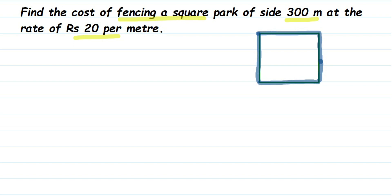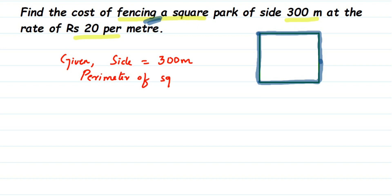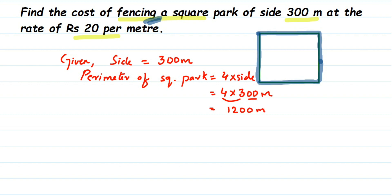To find out the cost we're going to find the perimeter of the square, because we're putting a fence here. So given: side = 300 meters. Perimeter of square park = 4 × side = 4 × 300 = 1200 meters. So we got the perimeter as 1200 meters, now we have to find out the cost.